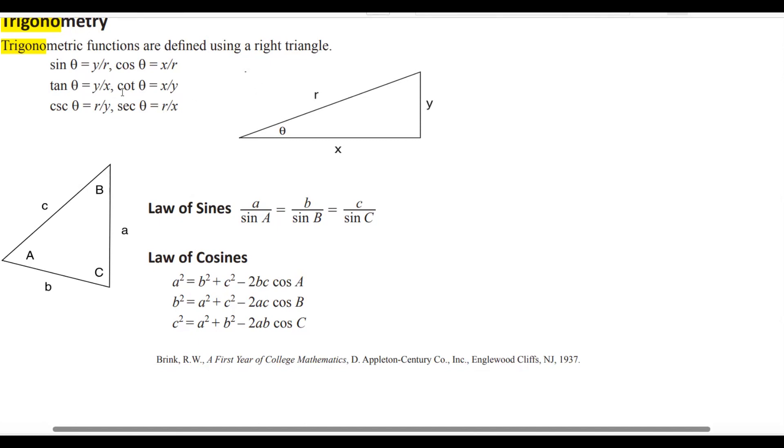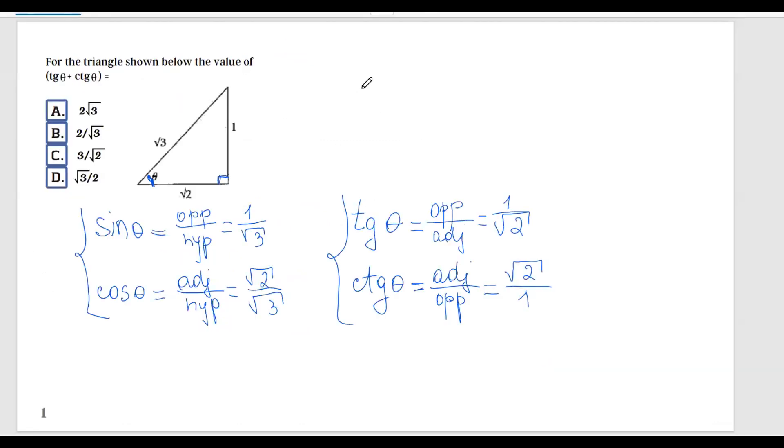Now that you know you have these formulas available, let's go back to our problem and try to solve tangent of theta plus cotangent of theta. So tangent theta plus cotangent theta equals...